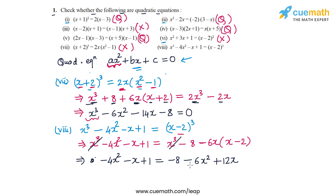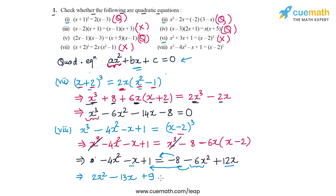Writing in standard form: bringing −6x² to the left gives 2x², bringing 12x to the left gives −13x, and shifting −8 to the left gives +9. So the equation reduces to 2x² − 13x + 9 = 0, which is clearly a quadratic equation.